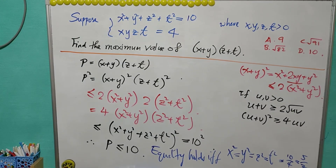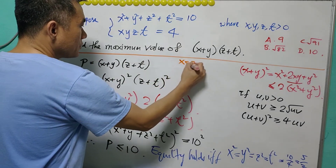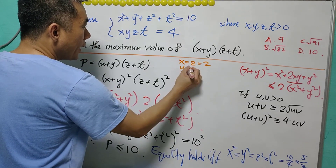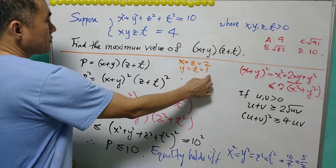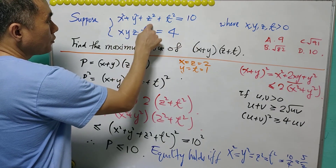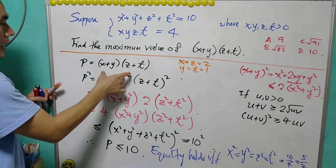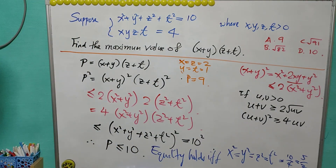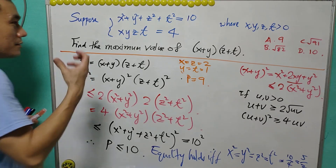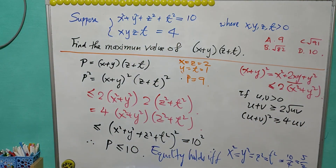Some people will choose a because it is quite easy to get p = 9. If x = z = 2 and y = t = 1, then x² + y² + z² + t² = 4 + 1 + 4 + 1 = 10, and 2 × 1 × 2 × 1 = 4. In that case, p = (2+1)(2+1) = 9. So 9 is achievable and 10 is not. The natural question is: can we get something more than 9? Can it be b) √82 or c) √91?